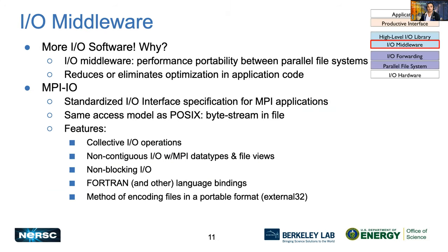Moving down further into the IO stack, we now reach the IO middleware. We may ask ourselves: why more IO software? This layer provides portability across parallel file systems, letting developers focus on their application rather than spending time optimizing for several parallel file systems used at different computing centers. MPI.IO is the IO middleware used for the MPI standard and works on POSIX files, allowing developers to easily perform collective and/or non-blocking IO.